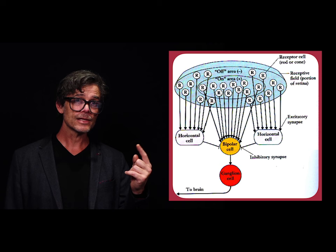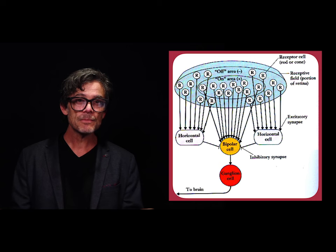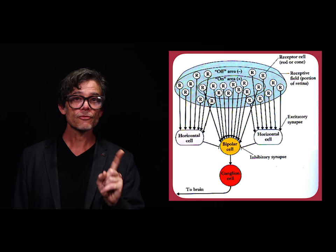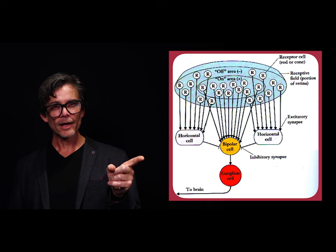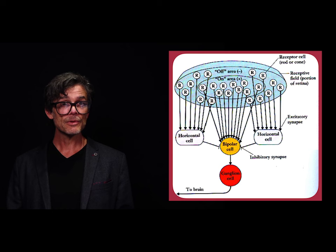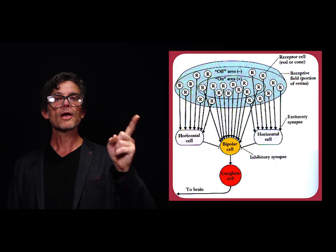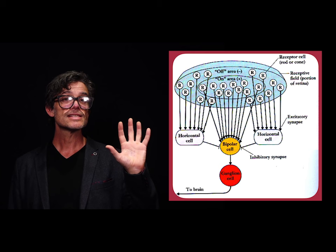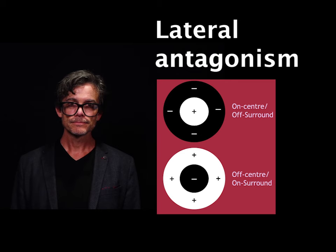If this bipolar cell is stimulated, it will drive the ganglion cell below it. Importantly, however, the horizontal cells send inhibitory input to the bipolar cell. If inhibited, the bipolar cell will not fire, and nor will the ganglion cell. To make this bipolar cell fire, it must receive greater excitatory input from the receptors in the on area than in its off area. If the receptors in the off area are stimulated, this will inhibit the bipolar cell. In other words, to elicit a response from this ganglion cell, more light has to fall into the on area — the central region — than in its surrounding off area. This is known as lateral antagonism.